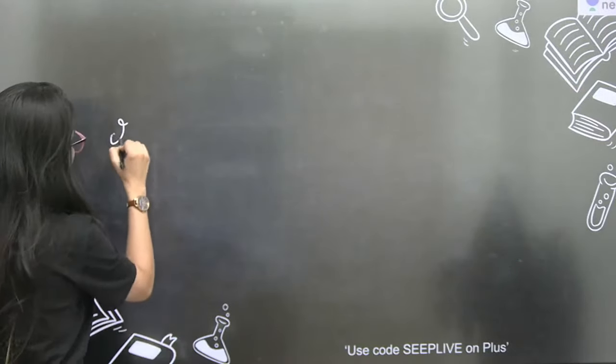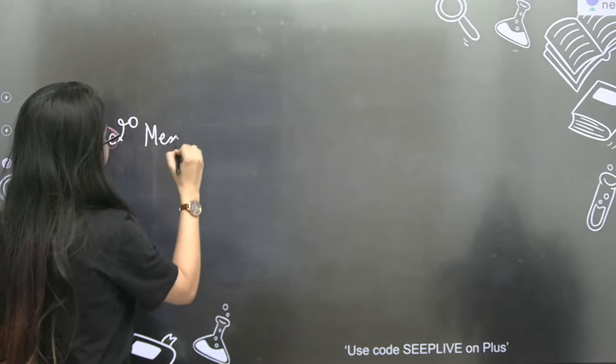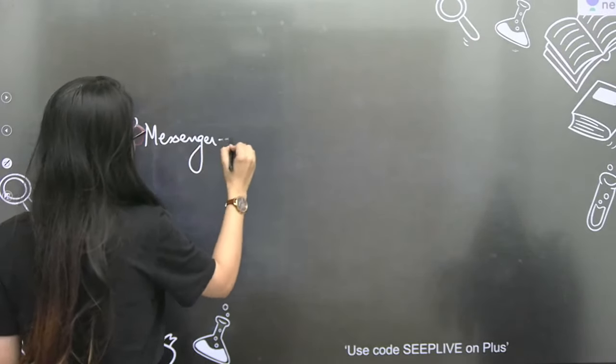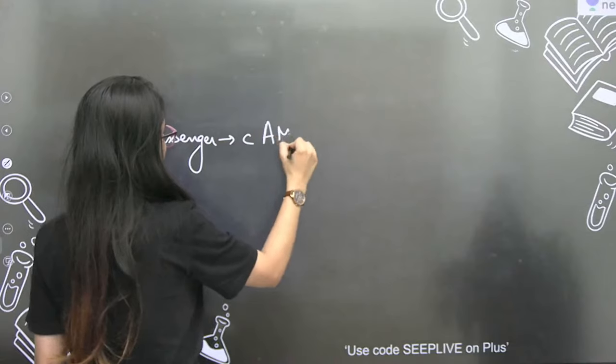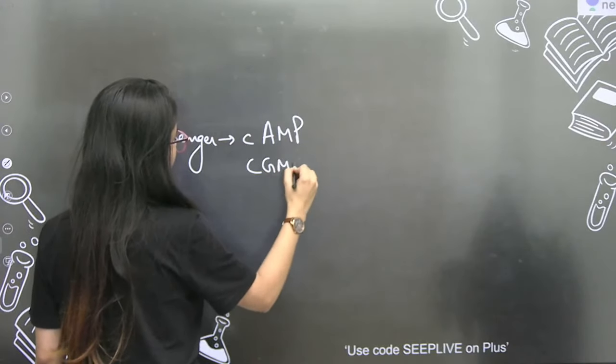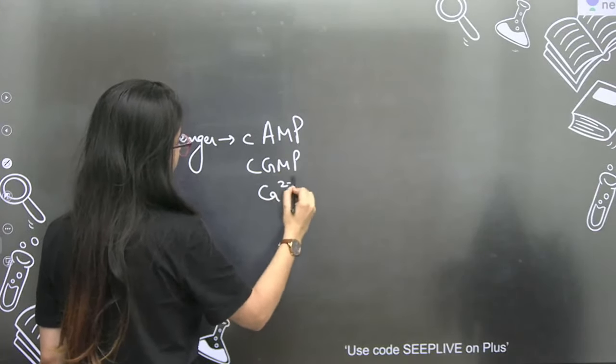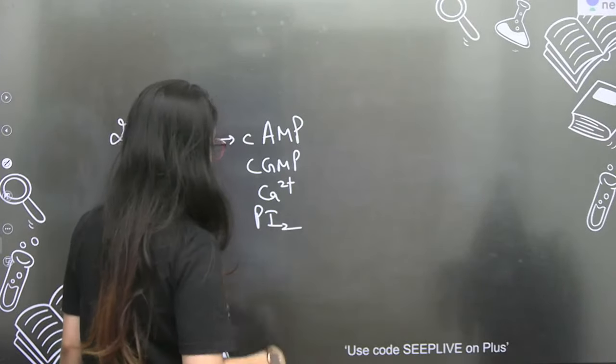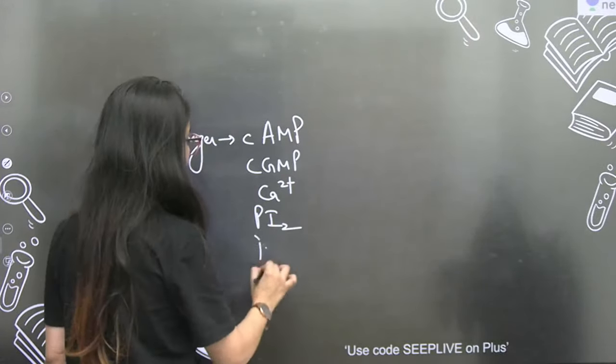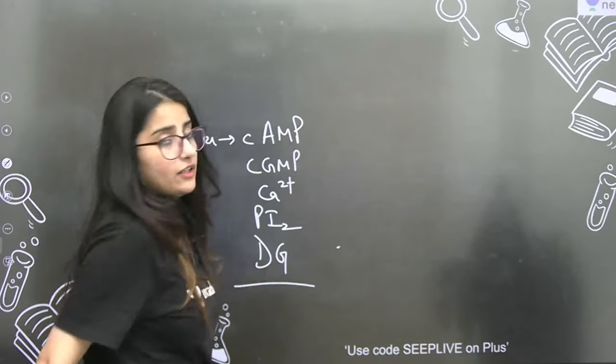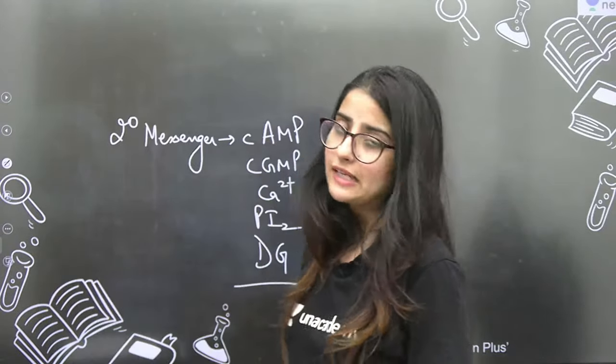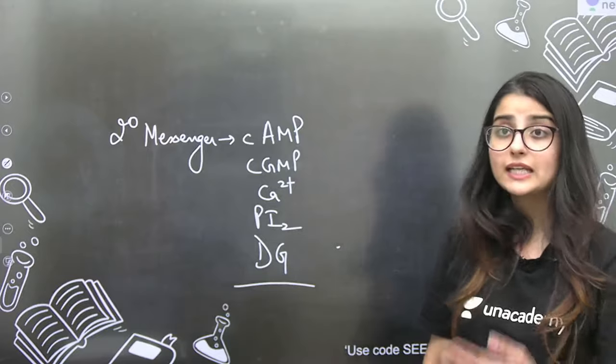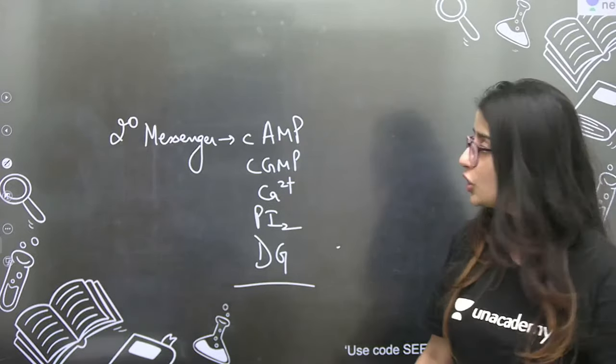So this is your mechanism of hormonal action - lipid soluble and lipid insoluble. Who is using secondary messenger? Lipid insoluble. There are many secondary messengers besides cyclic AMP - there is cyclic GMP, calcium ion, phosphoinositol diphosphate or triphosphate, then diacylglyceride. So these are the secondary messengers which work for lipid insoluble hormones.